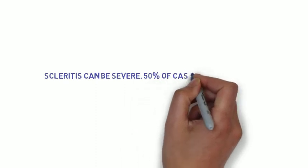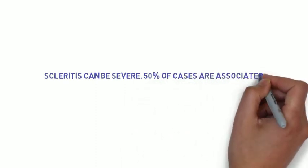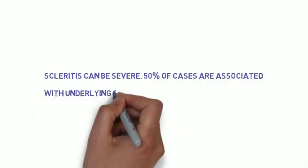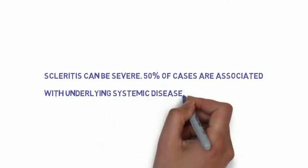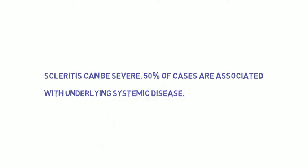Scleritis, on the other hand, can be very severe. In fact, over 50% of scleritis cases are associated with underlying systemic disease. This includes rheumatoid arthritis and lupus.